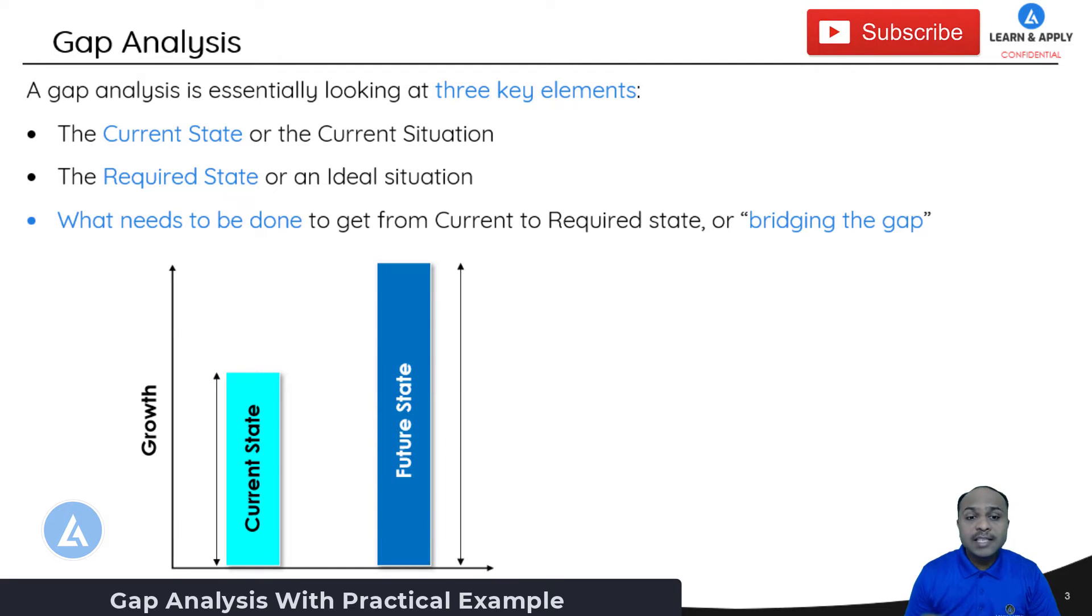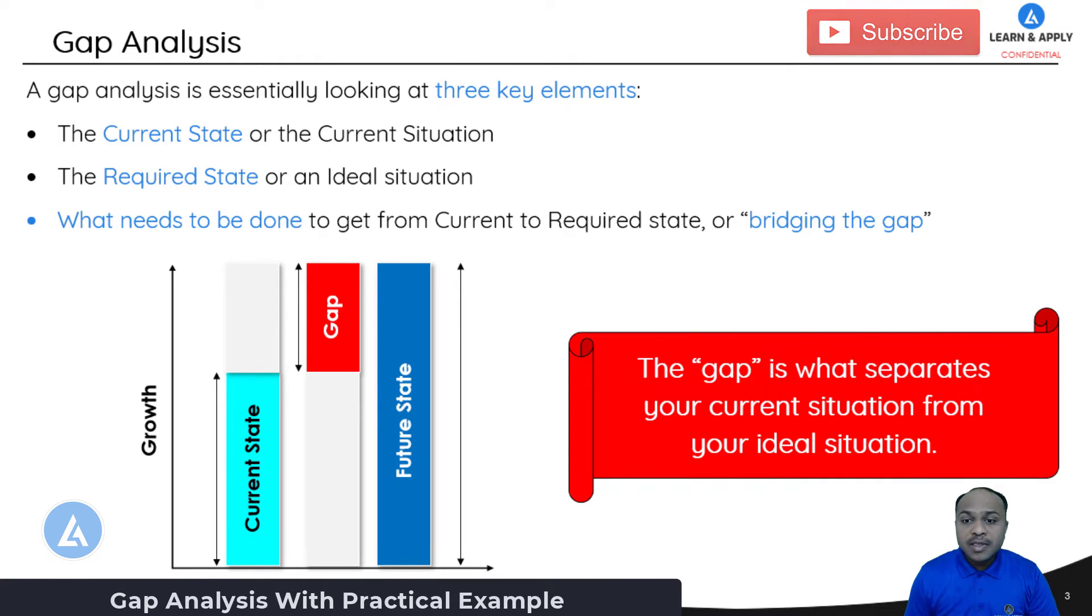Then the next element is the required state or this is also called as future state or ideal situation. And the third important element is what needs to be done to get from the current to required state or bridging the gap. In other words, we need to identify what is the difference between this future state and current state. This is also called as gap. Now what is a gap? The gap is what separates your current situation from your ideal situation. So this is the difference between what is the required state that you are planning against what is your current state.